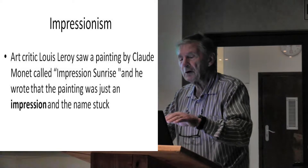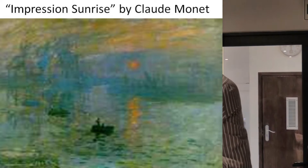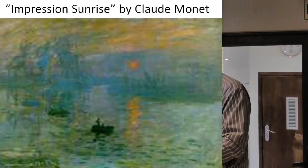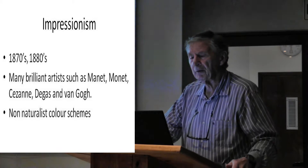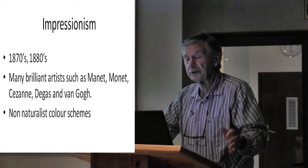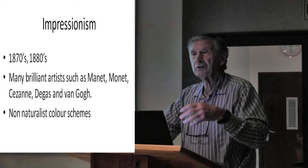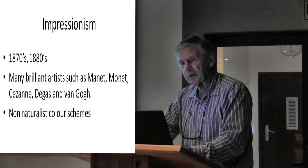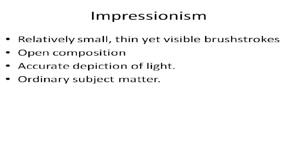There's the painting — you can see the sunrise; it is an impression as far as that was concerned. This was the start of Impressionism, from the 1870s to the 1880s. There were brilliant artists like Manet, Monet, Cézanne, Degas, and Van Gogh — they were all involved. Non-natural colours were basically used, so it was a very exciting time as they were experimenting on all sorts of things.